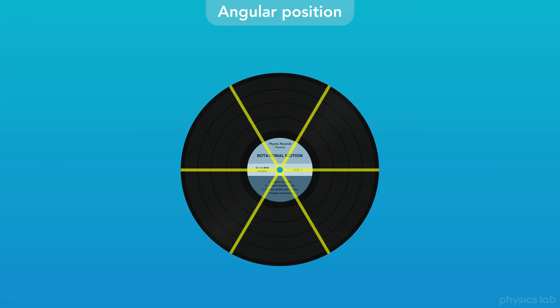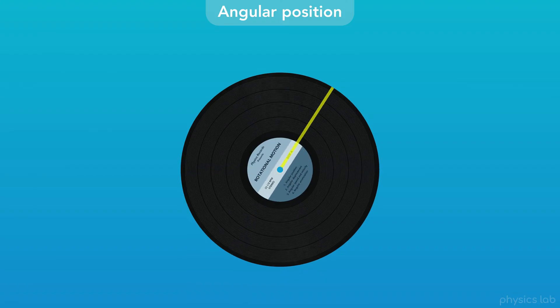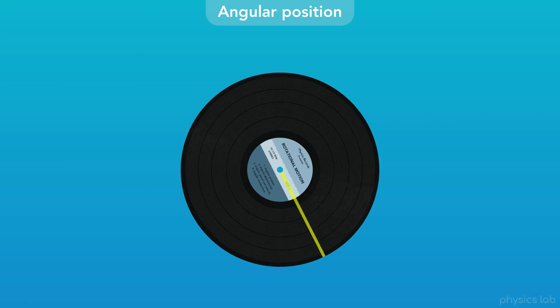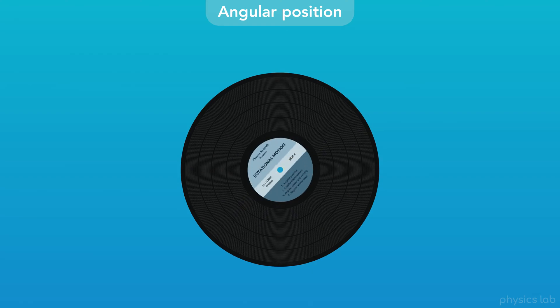It's easier to show what's happening with just one line, but keep in mind that when we talk about the angular position of this line, we're actually representing the angular position of the entire record.